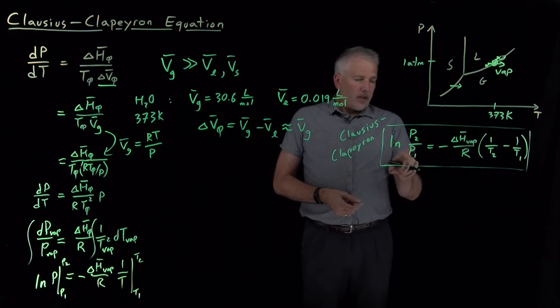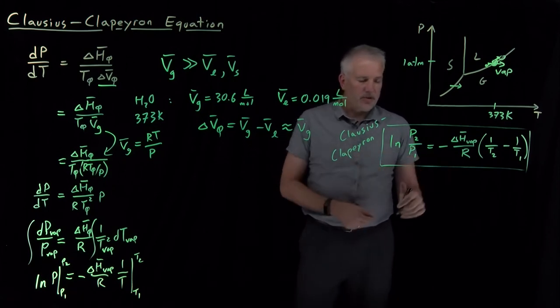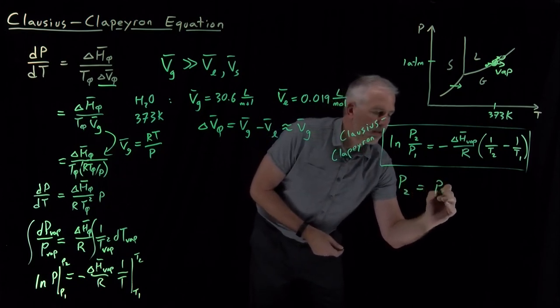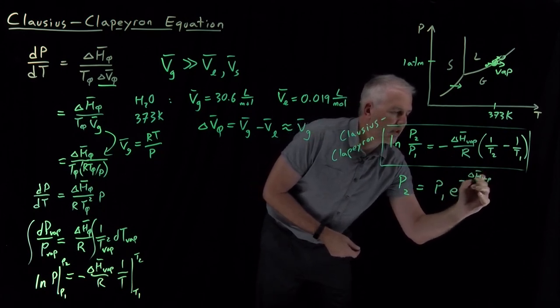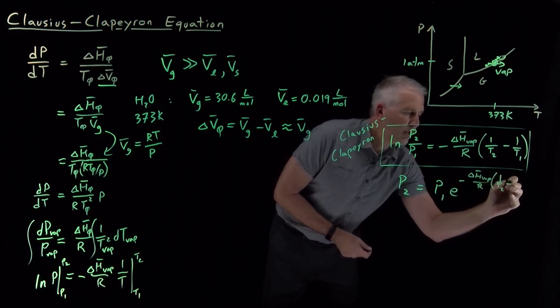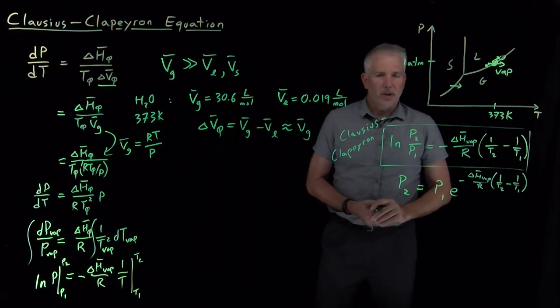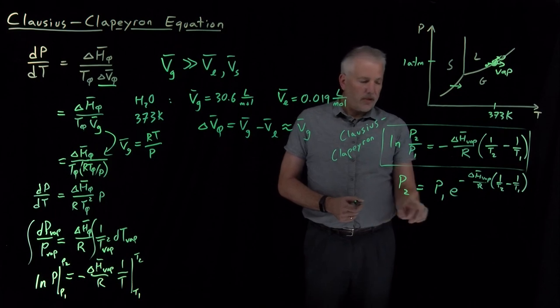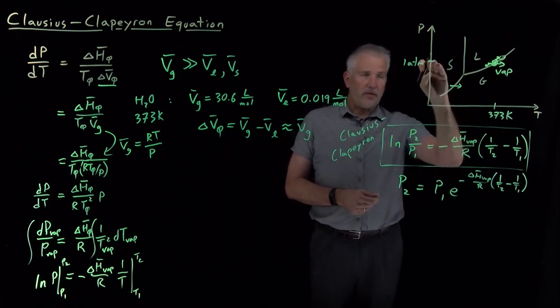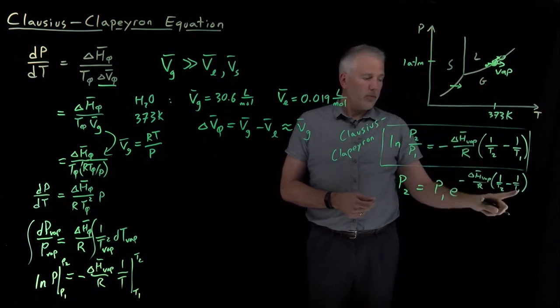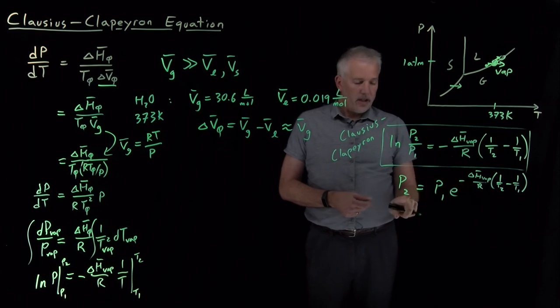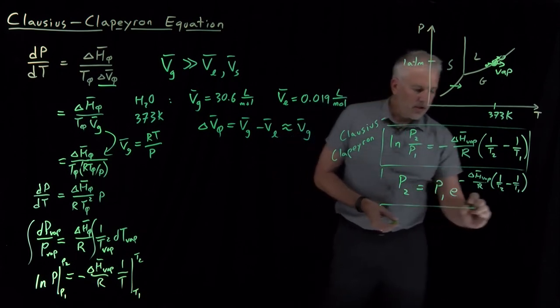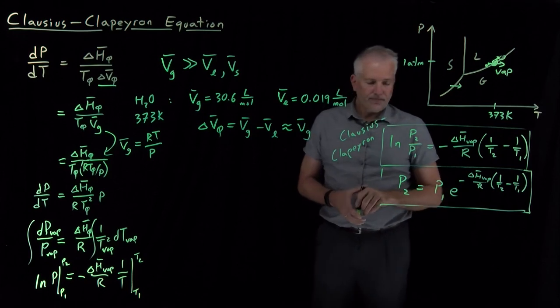If we rearrange this equation to get rid of the natural log, taking E to the both sides, this equation ends up looking like E to the minus enthalpy of vaporization over R, 1 over T2, minus 1 over T1. There's a couple other ways we can write that expression as well, but this is a convenient one when we want to solve for a pressure at different temperatures. So, for example, if we know the normal boiling point of water, 373 Kelvin in one atmosphere, we can calculate the boiling point at some different temperature. If we have a different pressure, we can calculate a T2, or if we have a different T2, we can calculate a P2. So, that's just a different form of the Clausius-Clapeyron equation.